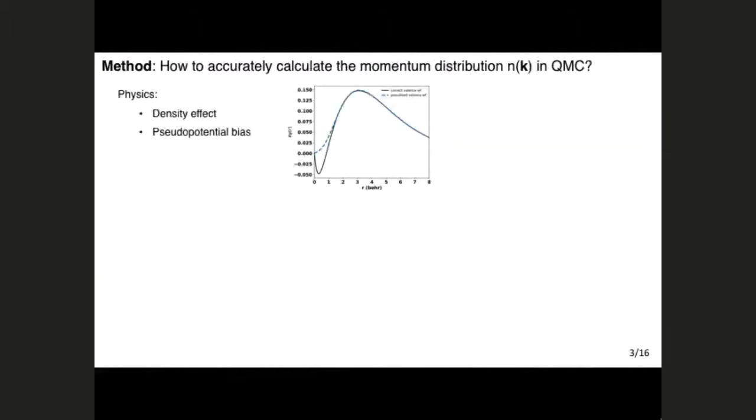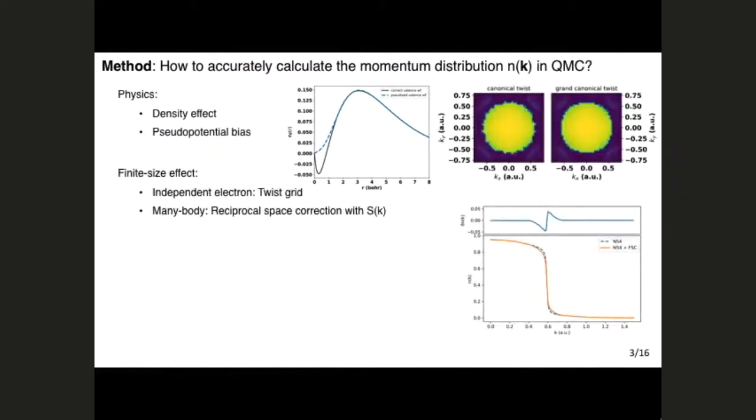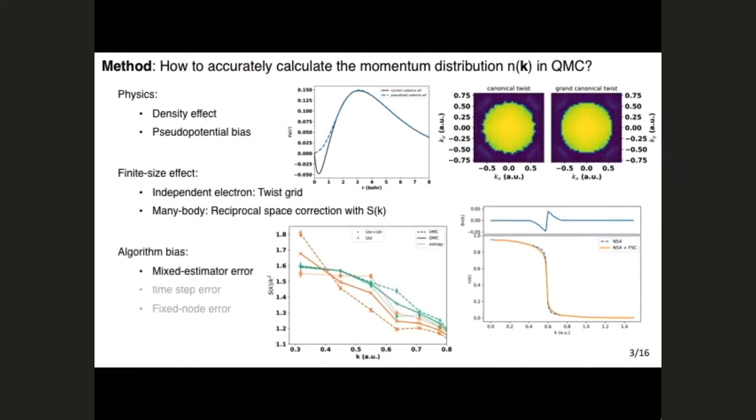Just kind of an outline of some of the things I want to talk about. So first I want to talk about the method, and I wouldn't show this to any other audience, but here we want to learn how to do QMC accurately. So I'll show the challenges and how we were able to get accurate momentum distribution from quantum Monte Carlo. It turns out the most important thing to get right is the physics, who would have known? But then finite size effects are also very important, and there are algorithm effects that we take into account. So I'll save the best for the last, but I will first start out with describing the finite size effect, which can be grouped into two conceptual categories.